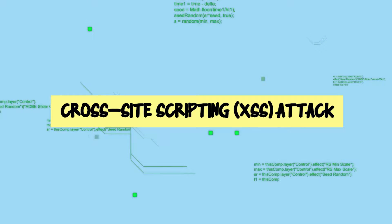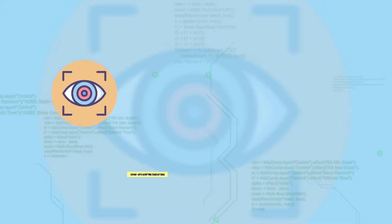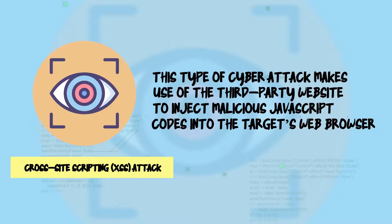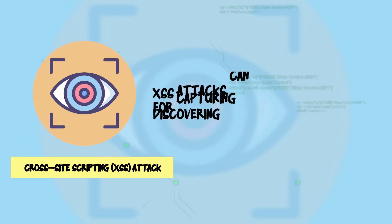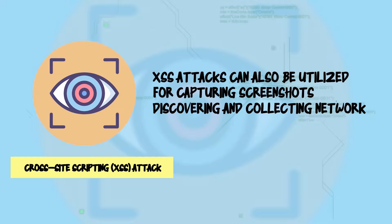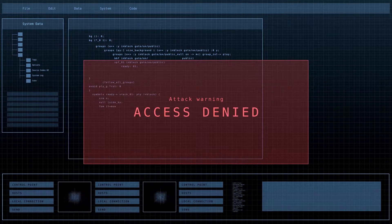At number eight, we have cross-site scripting, or XSS, attack. This type of cyber attack makes use of a third-party website to inject malicious JavaScript codes into the target's web browser. XSS attacks can also be utilized for capturing screenshots, discovering and collecting network information, and gaining remote access and control over the victim's computer network.